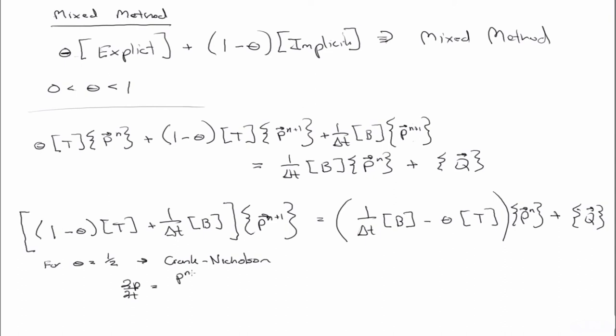And if you remember, so this would be evaluated at the sort of n plus 1 half time step. And if you remember, the central difference method has order delta t squared error. So this is second order accurate.